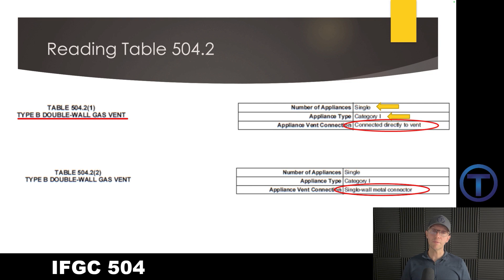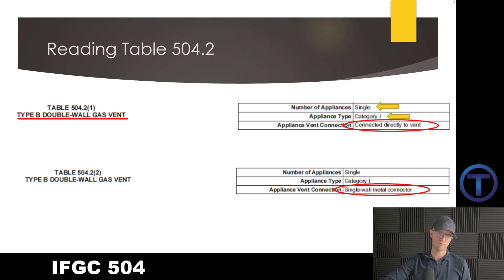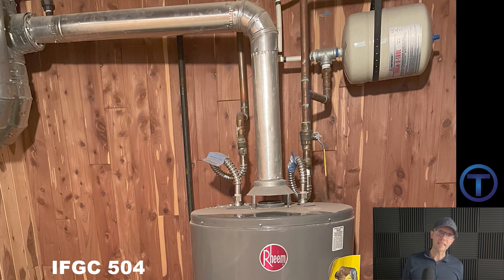These are single appliance tables. So I've got one appliance and it's Category 1. You'll find that on a smaller table across the top of the page — single appliance, Category 1, and then the appliance vent connection. It is connected directly. Or there are other tables that say we have a single wall metal vent connector. So you can either take that B vent right down onto the top of the appliance, where the whole thing is the same type of vent, or sometimes we have the double wall B vent and a single wall connector. That's probably the most common way we handle it.